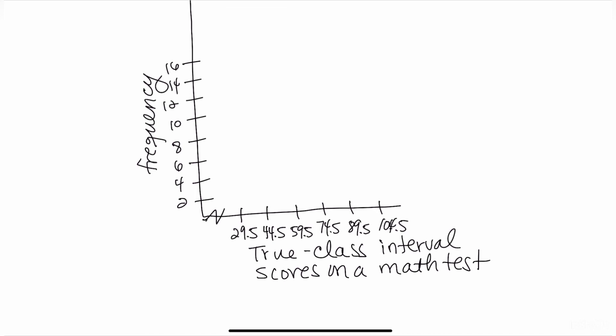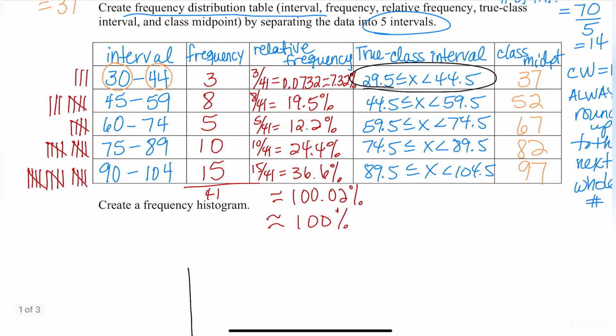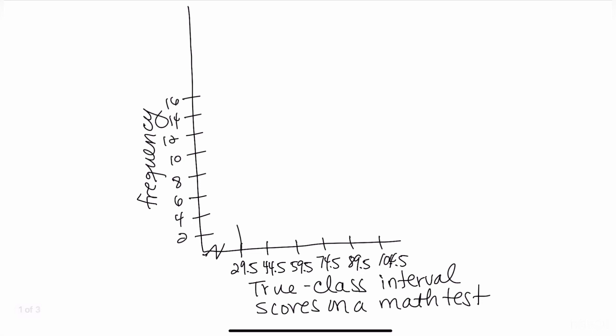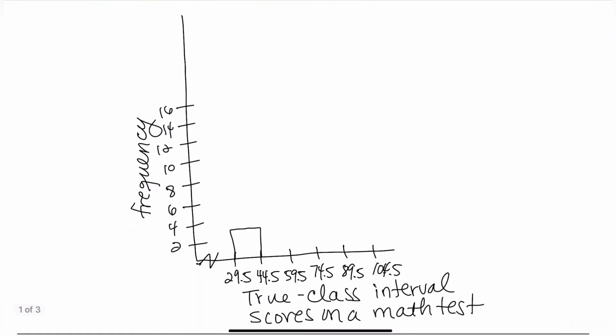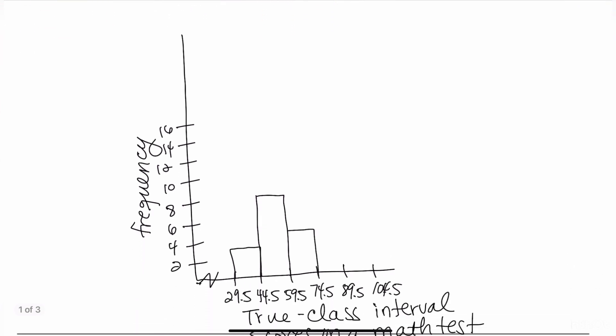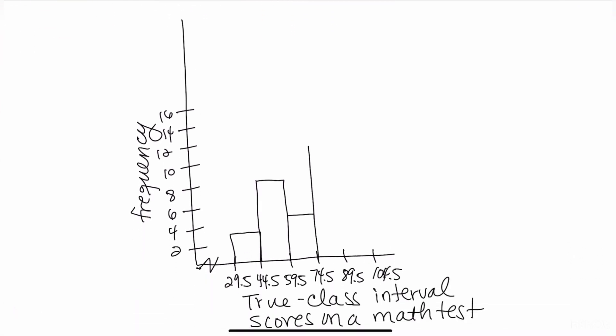Now I'm ready to create my histogram. The first bar goes from 29.5 to 44.5 with frequency three. As neatly as you can, go to three. Then the next one is eight, then five, then 10, and finally 15. It's a little hard to do these freehand, but if you have graph paper it'll be better. Then at the end, just kind of shade them in nicely.